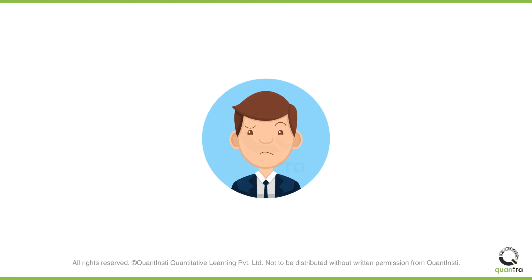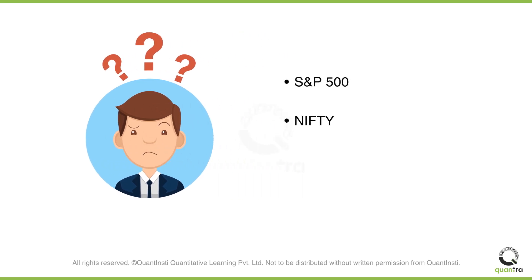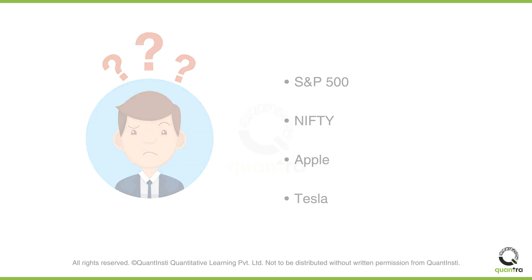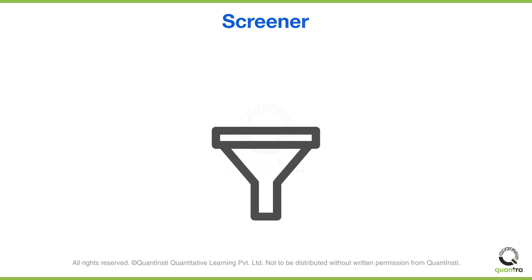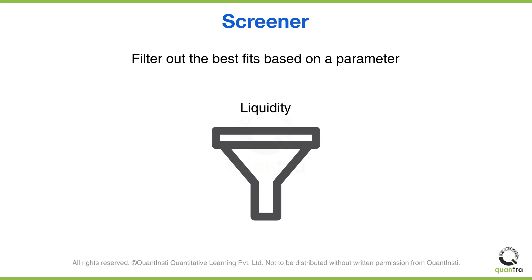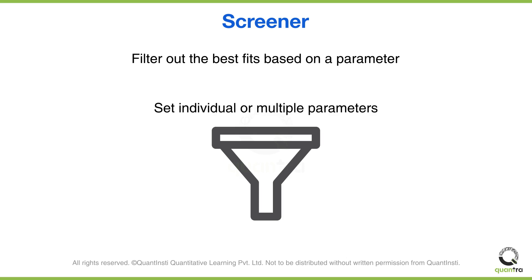Now you have a quality database, but the problem is that it's too huge. There are numerous underlying assets — indexes like the S&P 500 and NIFTY, and equities like Apple and Tesla — each with multiple options. To avoid getting overwhelmed, we use a screener, which filters out the best fits based on parameters you set, such as liquidity, implied volatility, or probability of profit — either individually or in combination. We will get into the details of these concepts in later parts of the course.